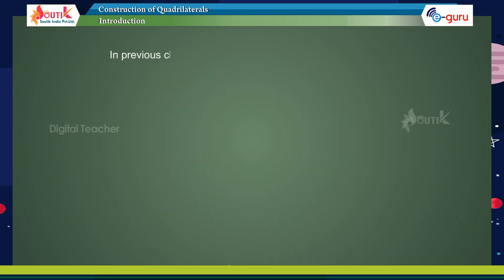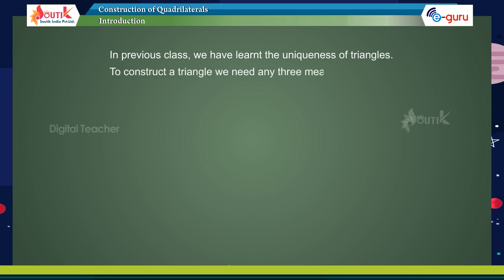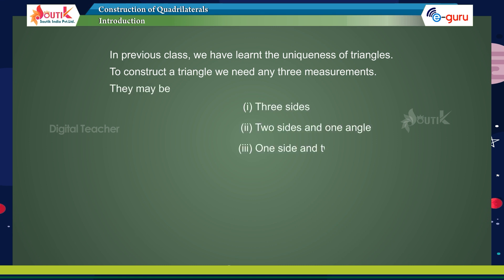In the previous class, we have learned the uniqueness of triangles. To construct a triangle, we need any three measurements. They may be three sides, two sides and one angle, or one side and two angles. Now, let us see how we will construct a unique quadrilateral.